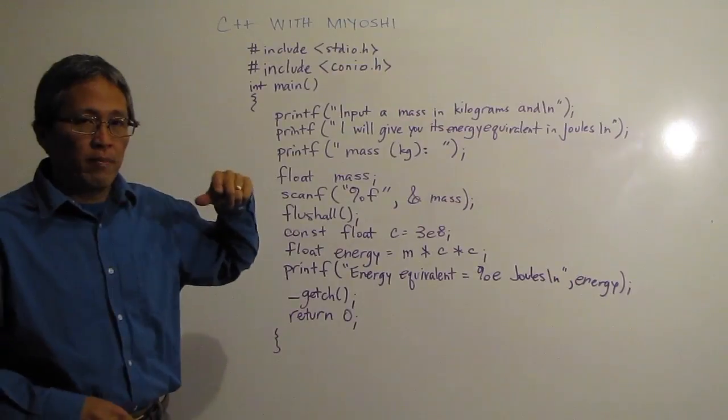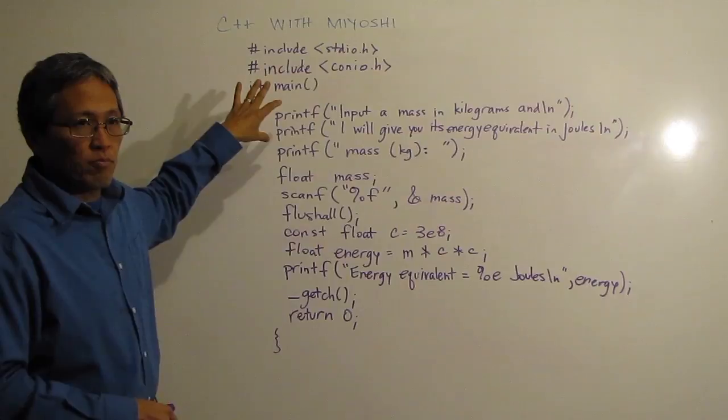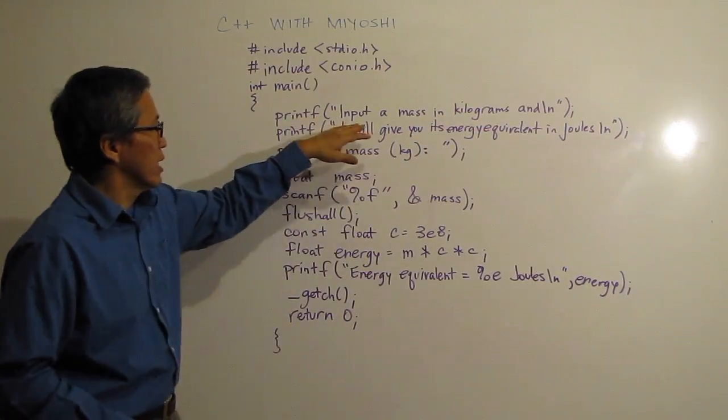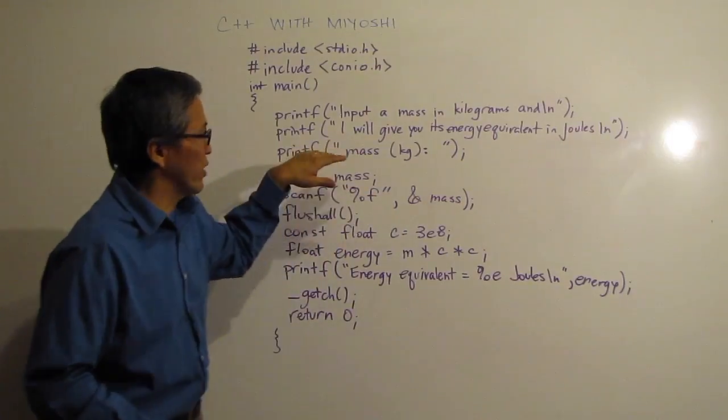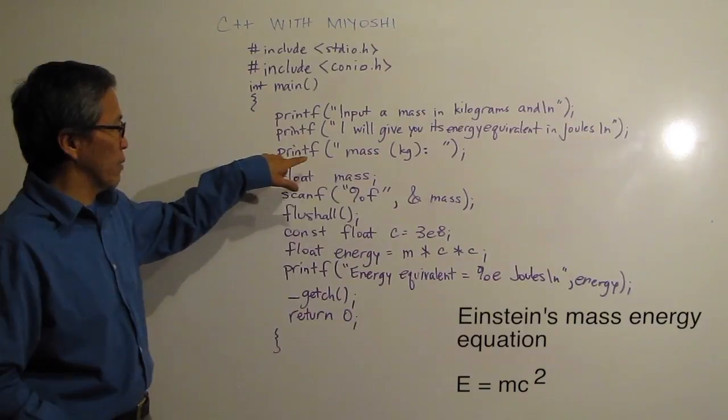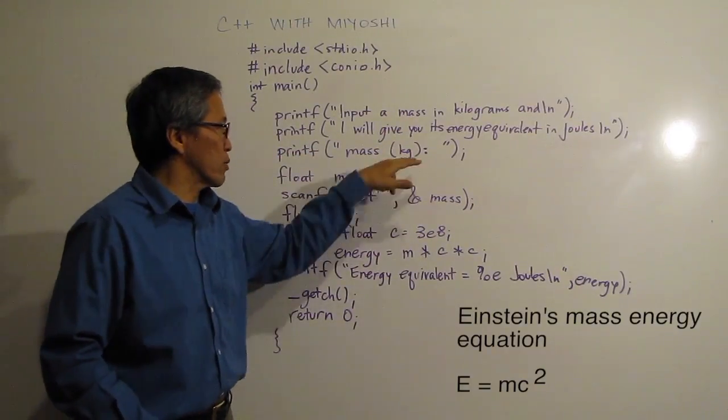Here in this program I have a little bit of input or I have some prompts to the user telling them what the program is going to do, so it says input of mass in kilograms and I will give you its energy equivalent in joules. So this is just Einstein's equation, and then it's got this little prompt here that says printf mass and we have kg in parenthesis with a colon.